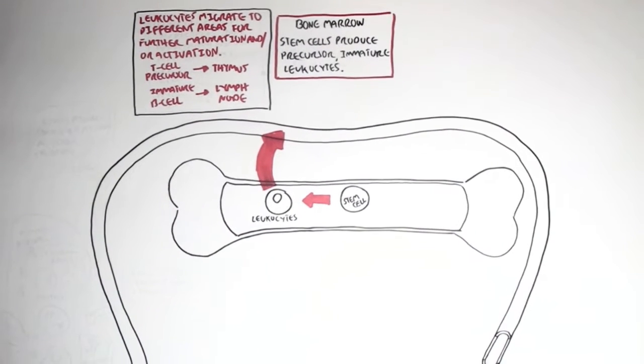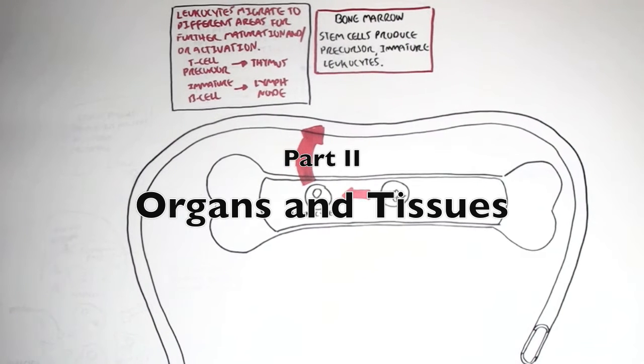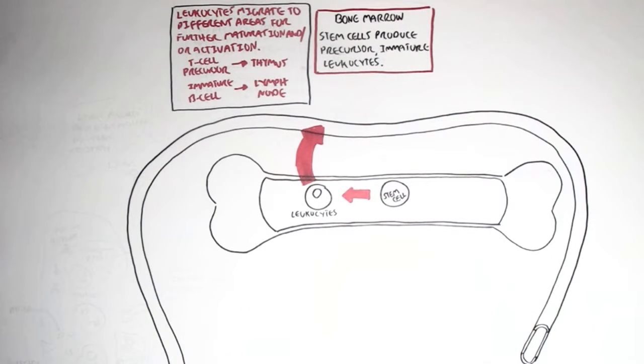Now in this video, what we will look at is some other organs which are important in the immune system and also which are part of the lymphatic system, such as the liver.